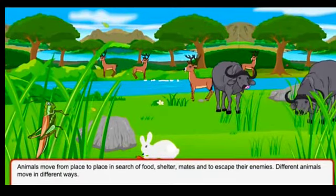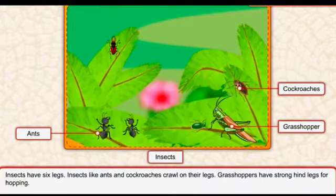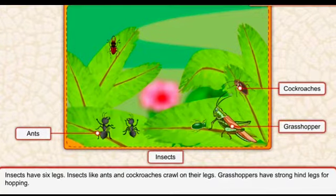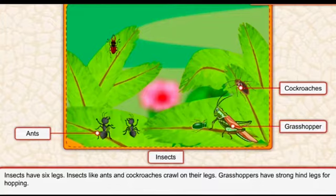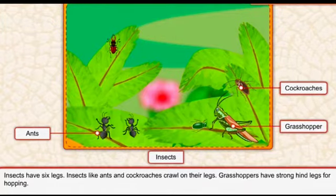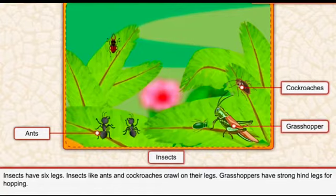Different animals move in different ways using different methods. Insects like ants and cockroaches crawl on their legs. Insects jo kidee hote hain unke paas 6 tangein hoti hain. Crawl word ka matlab hota hai pet ke bal chalna - cockroaches jo hote hain woh apne pet ke bal crawl karte hain.